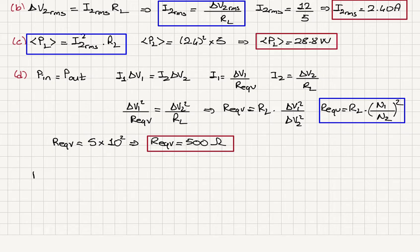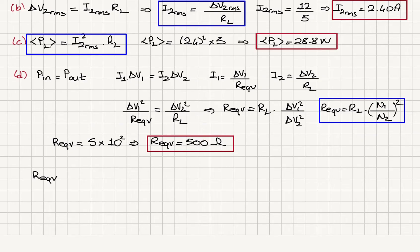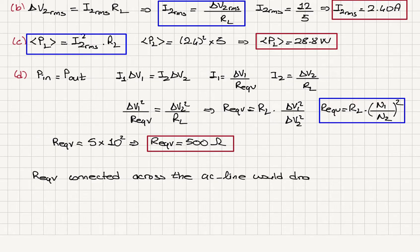We have shown it is the load resistance times the turns ratio squared. This equivalent resistance, if connected across the AC line, would draw the same average power as the load resistance.